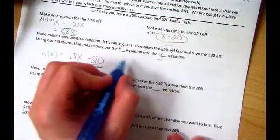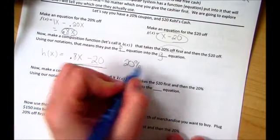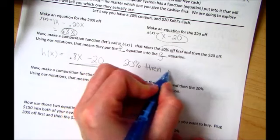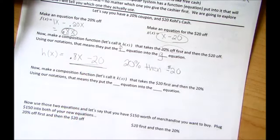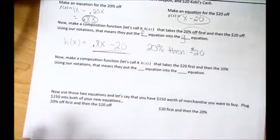So this is if I apply the 20% first, then the minus $20. That is the equation the computer system would have.